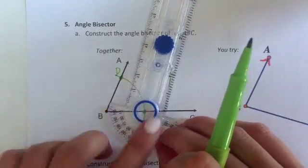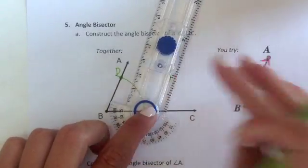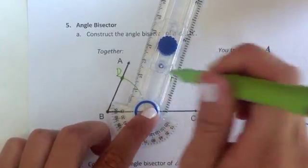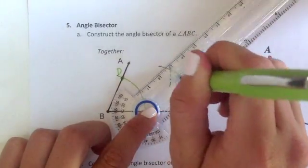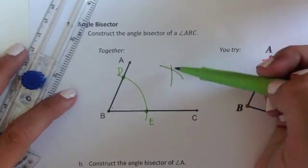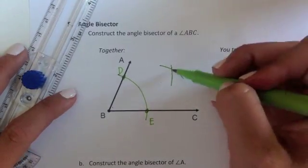Then I'm putting my center on E. This time I'm not going to change the radius. I'm gonna keep it exactly the same as what I just used over on point D. And I'm swinging that baby arc again. You should get them in an intersection. Intersect here.